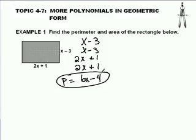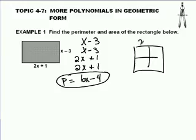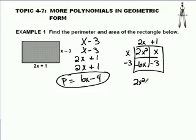You do the area. Area means base times height, so I'm just going to multiply the two together. I'm going to use the box method. It doesn't matter which I put on top and which I put on the side. When I multiply them together, I get 2x squared, negative 6x, positive x, and a negative 3. As I take them out, I get 2x squared. This combines to make a negative 5x minus 3, and that is my area.